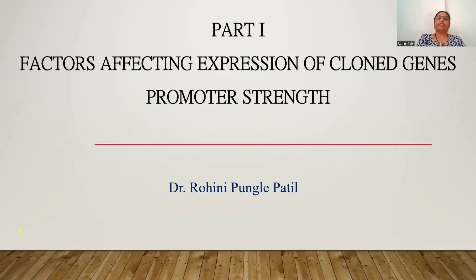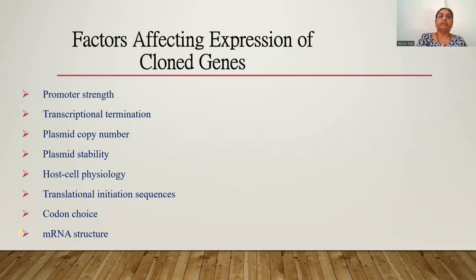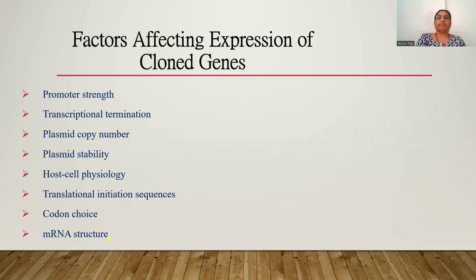For the expression of the gene at a higher level, one of the factors is promoter strength, and other factors are transcriptional termination, plasmid copy number, plasmid stability, host cell physiology, translational initiation sequences, codon choice, and mRNA structure. These are the factors responsible for the optimal expression of genes in E. coli. One by one we are going to learn all these factors in the incoming videos.